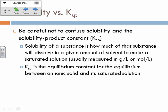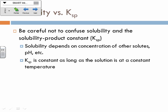Solubility is how much of a substance will dissolve — the concentration of the ions tells you the solubility. Ksp is just the equilibrium constant, which gives you a rough idea. Solubility depends on several things: you can change it by changing the concentration of other things in solution or the pH. The only way to change the K value is temperature — that's the only way you can ever change K. So those are some key differences between solubility and Ksp.